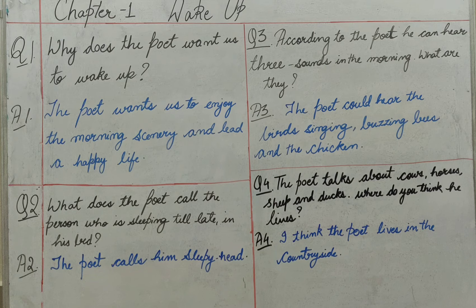The fourth question, the last question to be done in the copy, is: the poet talks about cows, horses, sheep, and ducks — where do you think he lives? The answer is: I think the poet lives in the countryside.